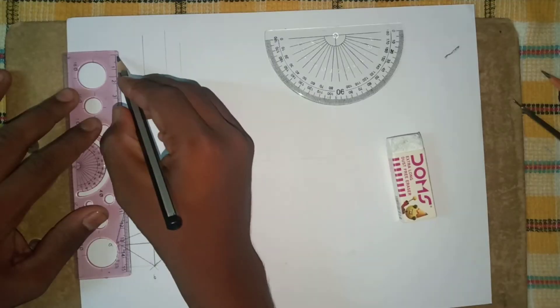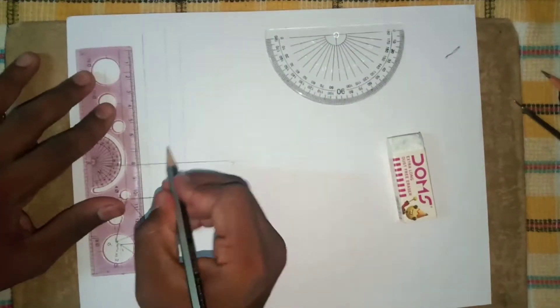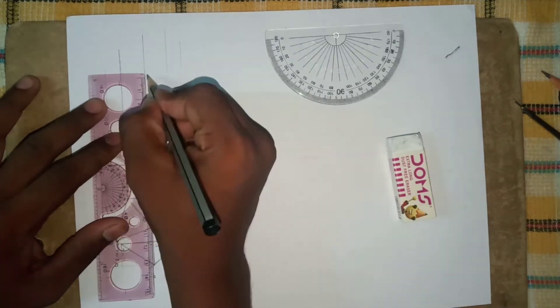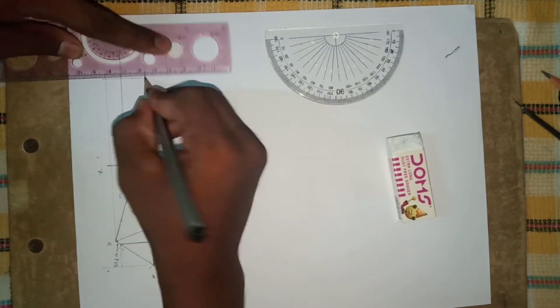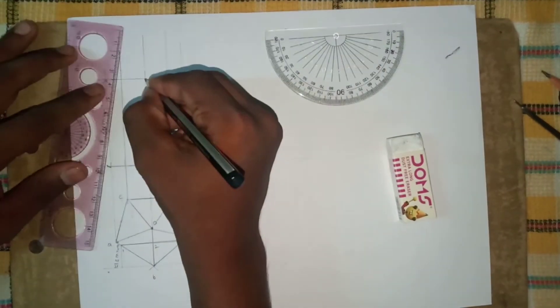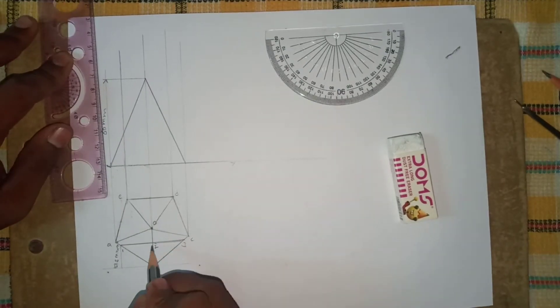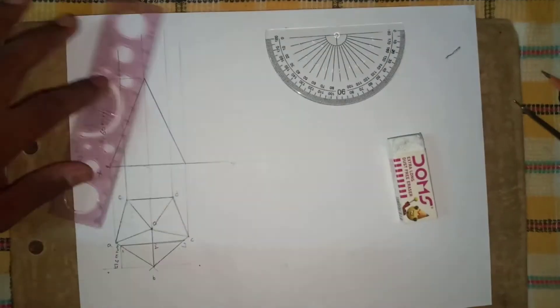Both points, both points, by using drafter it will come perfectly. Now here to 60 mm height of pentagon pyramid. Let's draw front view, let's draw front view like this.